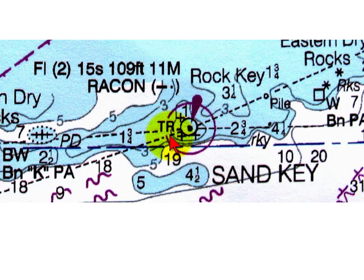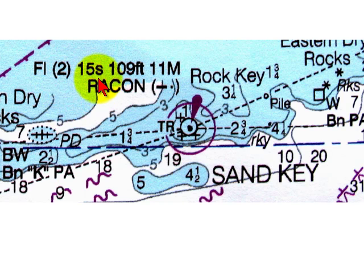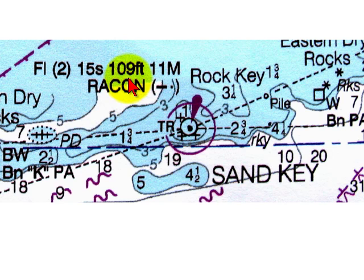Now let's take a look at the abbreviation written just above the light. The light carries a flashing characteristic and there are two flashes every 15 seconds. This is called a group flashing light, and you can tell it's a group because the two is inside parentheses. This means that the total period of light and dark that you will see is 15 seconds. This light is 109 feet tall, and on a clear night you can see this light from 11 miles away.